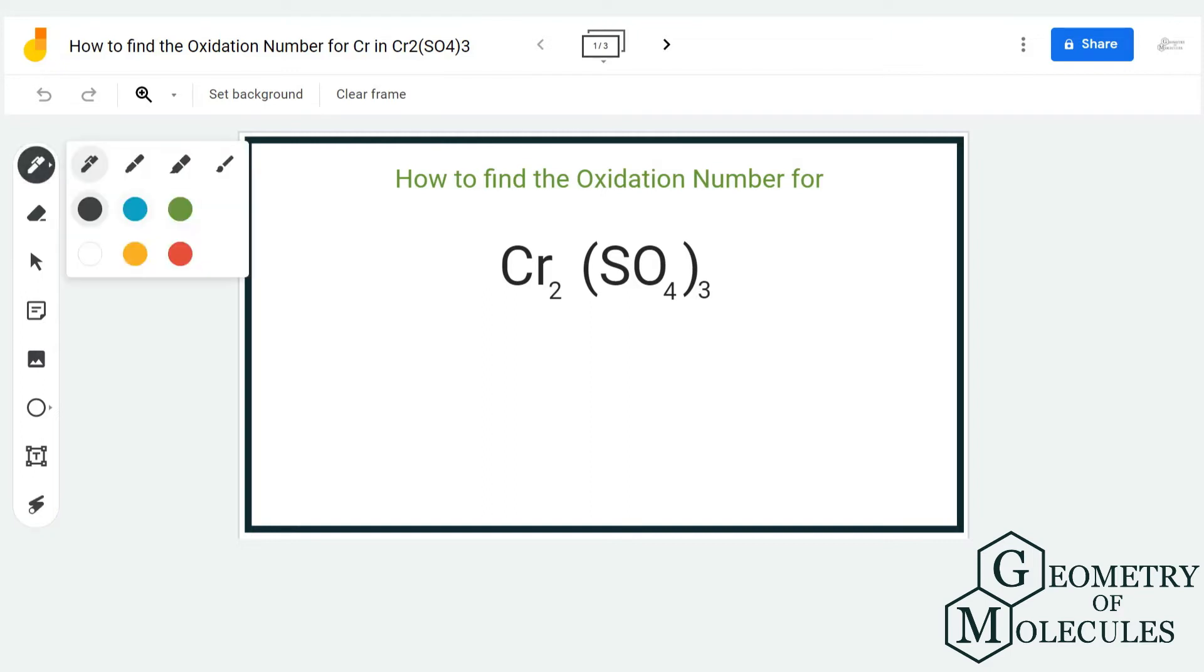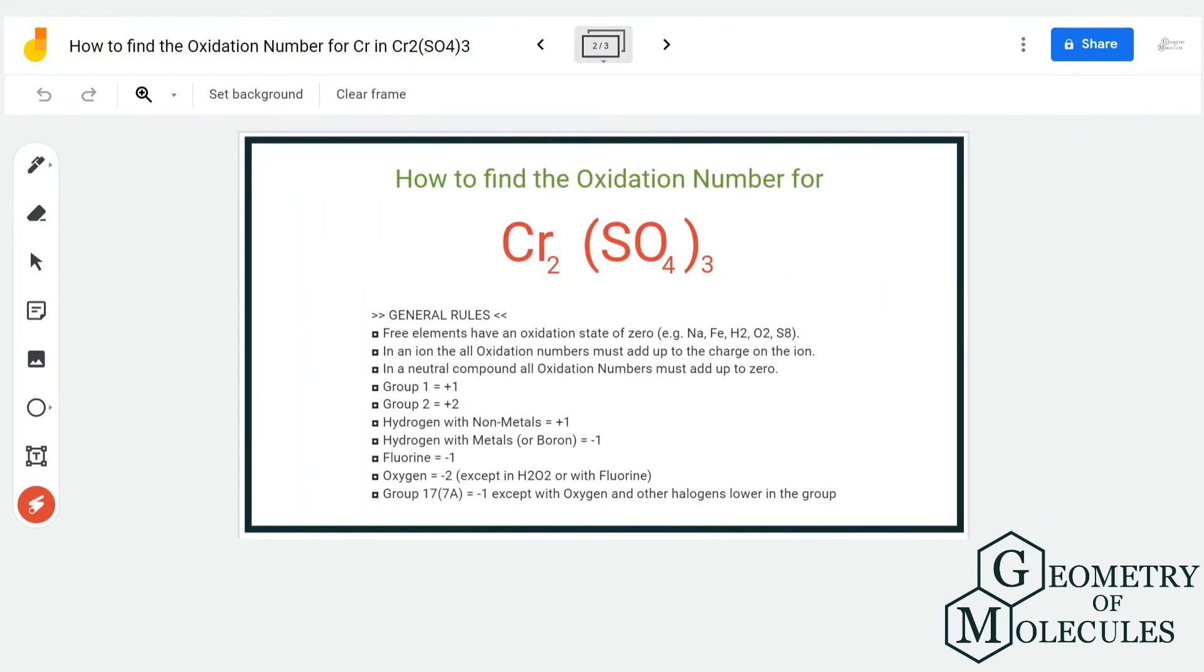Here, as you can see, there are no negative or positive charges, which means it's a neutral compound. So the sum total of the charges of chromium and SO₄ is zero. That helps us understand what charges we can expect out of Cr₂ and SO₄.